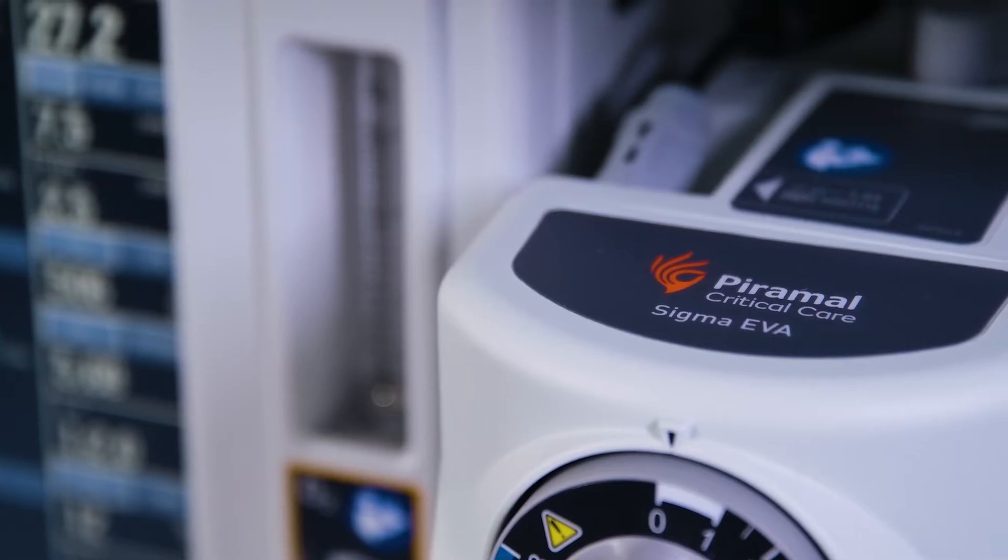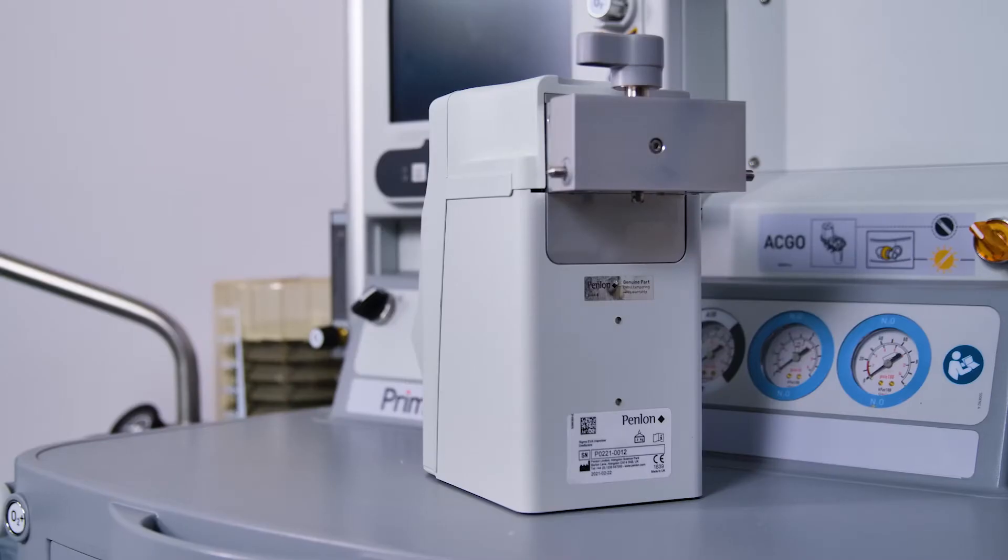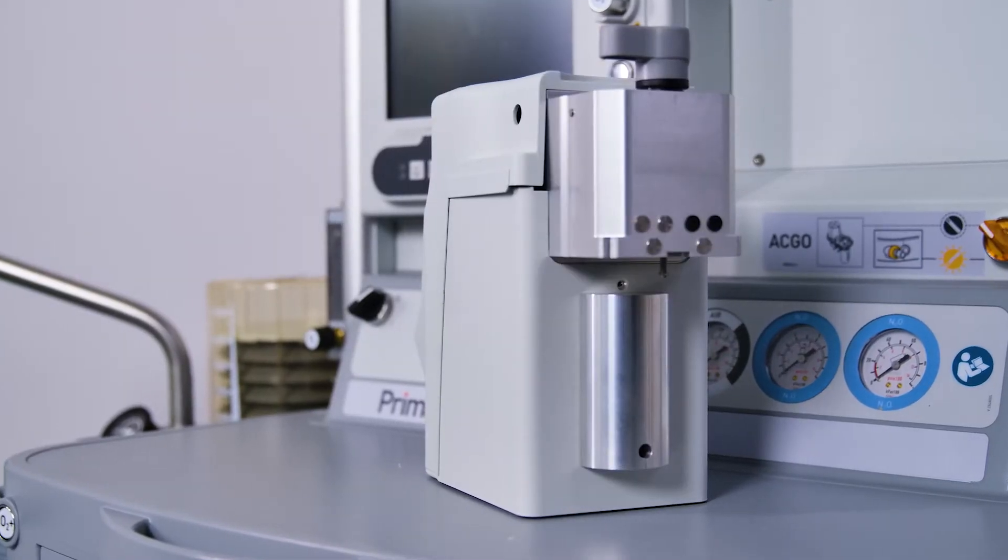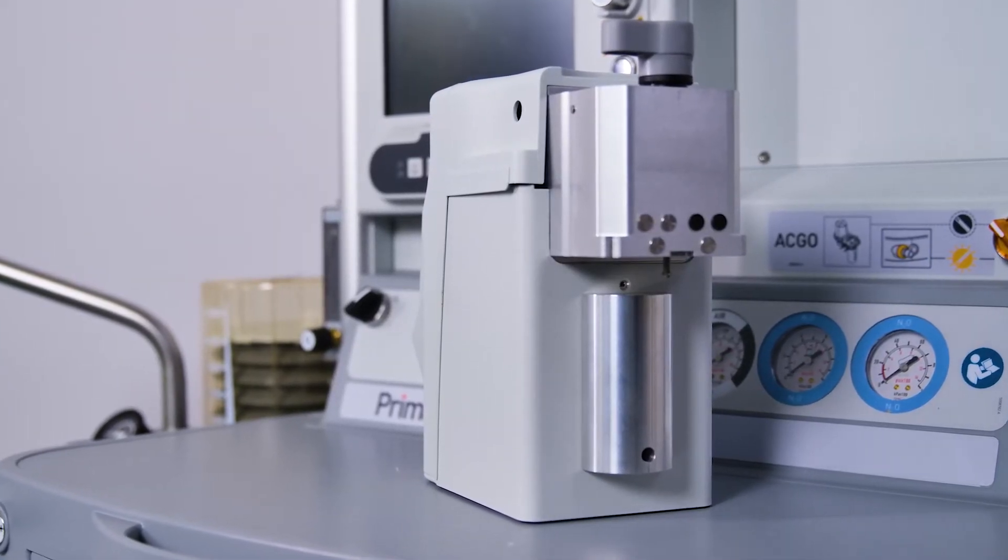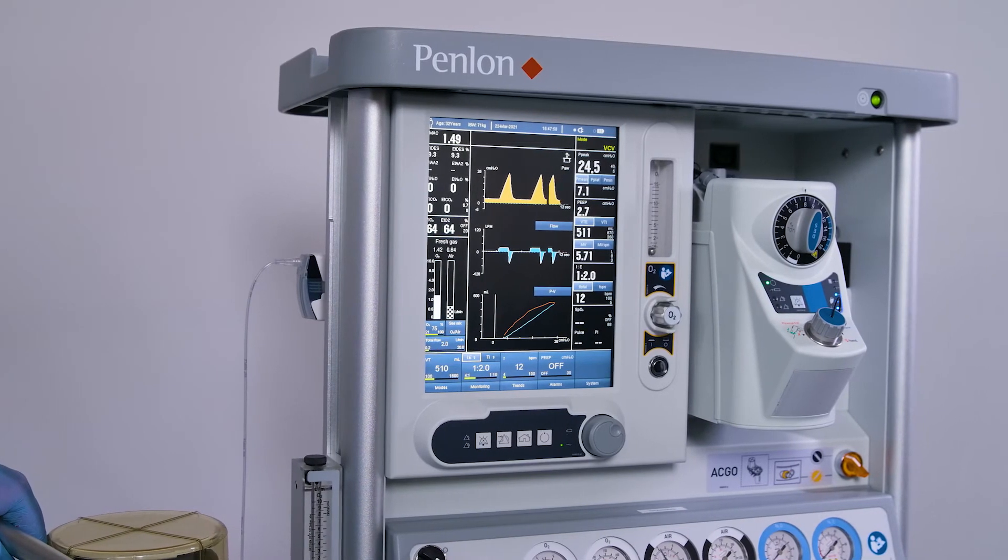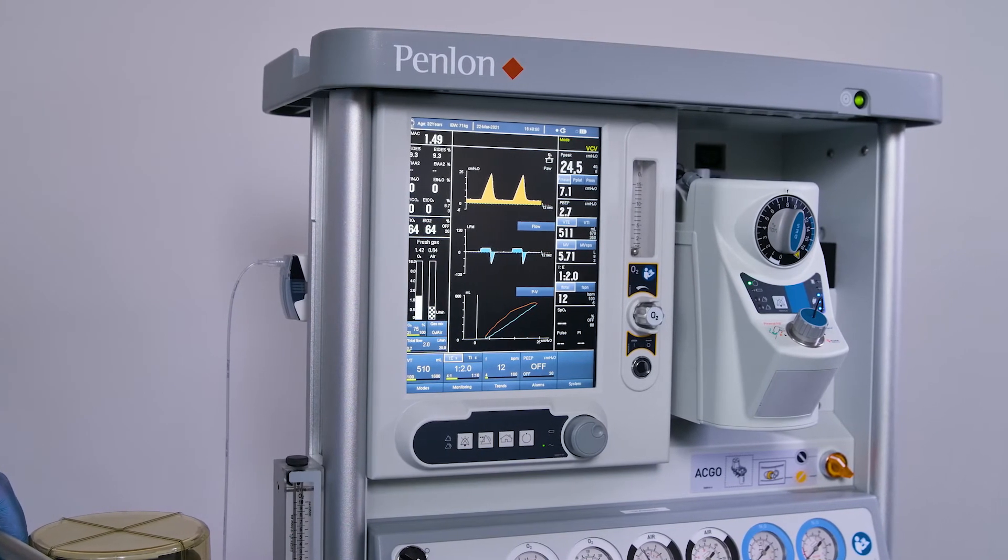The Sigma EVA vaporizer is available with Selectatec or Draeger Auto Exclusion interlock back bars. The Sigma EVA is a mains-powered electronic vaporizer with battery backup.